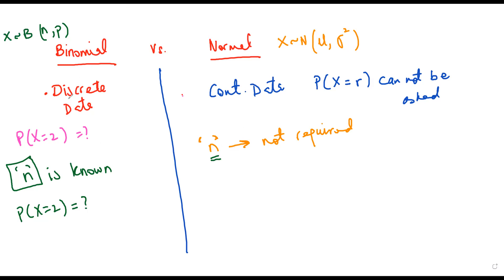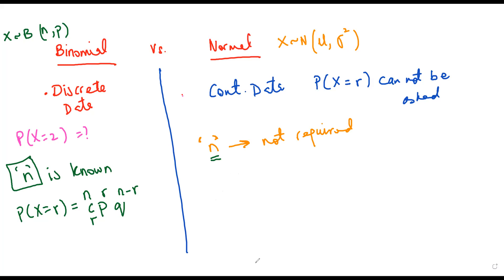To summarize: binomial distribution deals with discrete data, n must be known, while normal distribution deals with continuous data and n is not significant. The next major difference is how probabilities are calculated. For binomial, if x is distributed with n trials and probability of success p, then P(x = r) is calculated using the formula nCr × p^r × q^(n−r). In normal distribution, there is no direct formula — probabilities are found from a table called the standard normal distribution table.